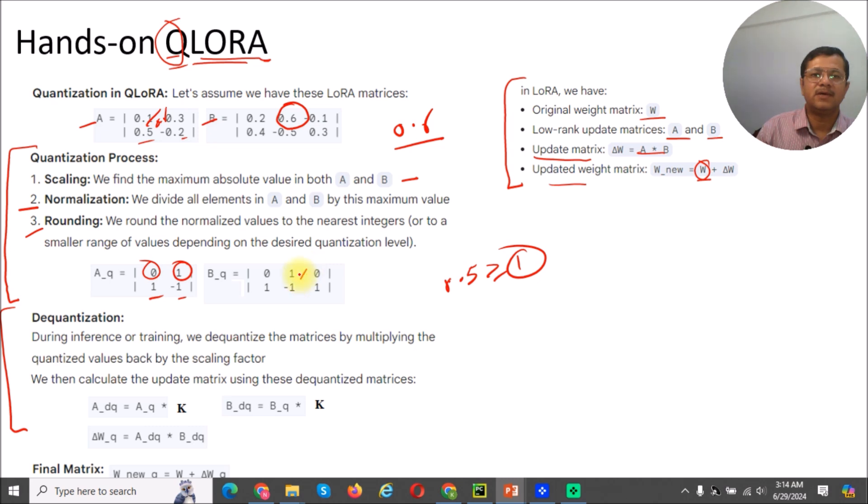So that way we will change the entire matrix. Here it is 0.6, so 0.6 divided by 0.6 is 1. Here it is 0.2 divided by 0.6, which will be less than 0.5, so it is 0. That way we create a rounded matrix. So now we converted the matrix into the integer format. This is the important part—the matrix is in integer format instead of floating-point format.